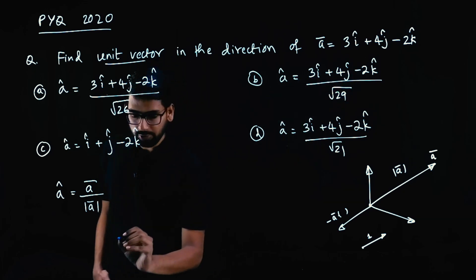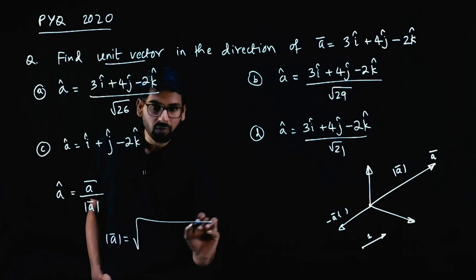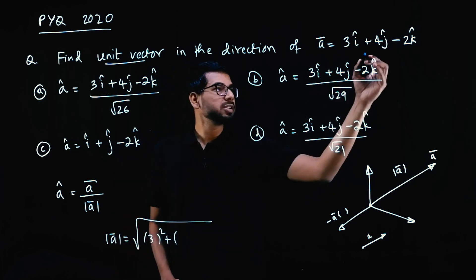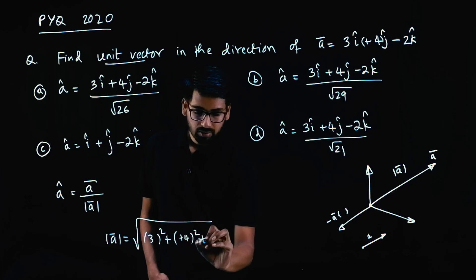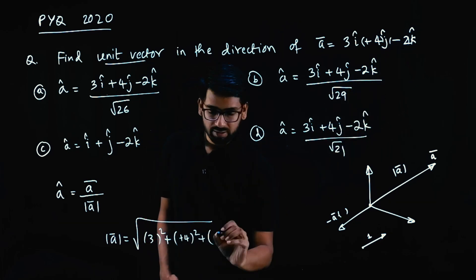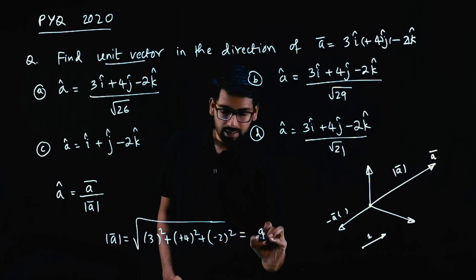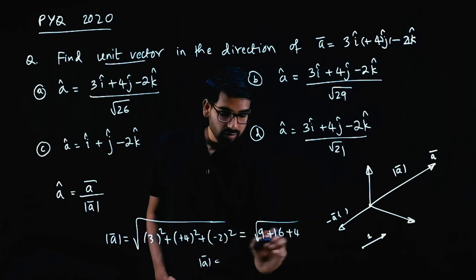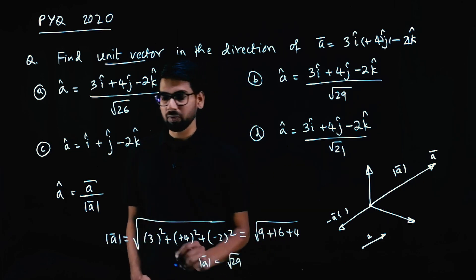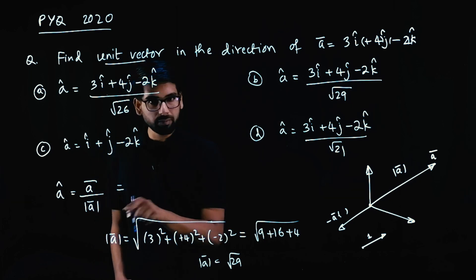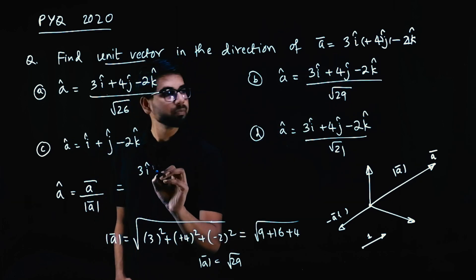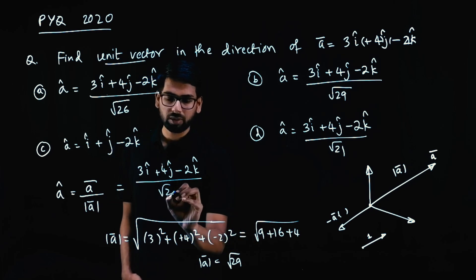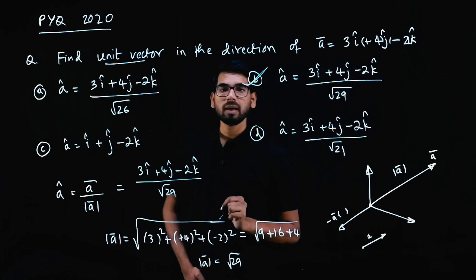So for ā, we find the magnitude of a, which is the square root of the sum of squares of the coefficients. The i coefficient is 3, j coefficient is 4, k coefficient is minus 2. So magnitude = √(9 + 16 + 4) = √29. So the unit vector â = (3i + 4j − 2k) / √29. Option B is the correct answer.